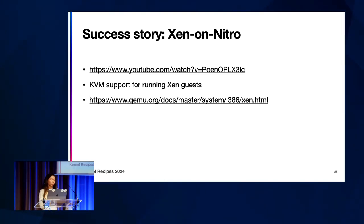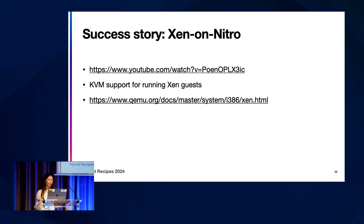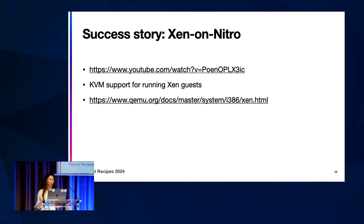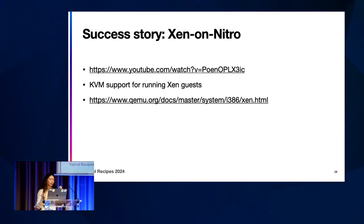The Xen on Nitro project adds the opportunity to run Xen guests on KVM. EC2 started with the Xen hypervisor and a large part of our fleet was still running on Xen — customers just don't want to migrate or change their workloads. Right now in production we take those Xen guests and on reboot migrate them to Nitro. Now you can also do it on upstream Linux, and there is KVM support for it.